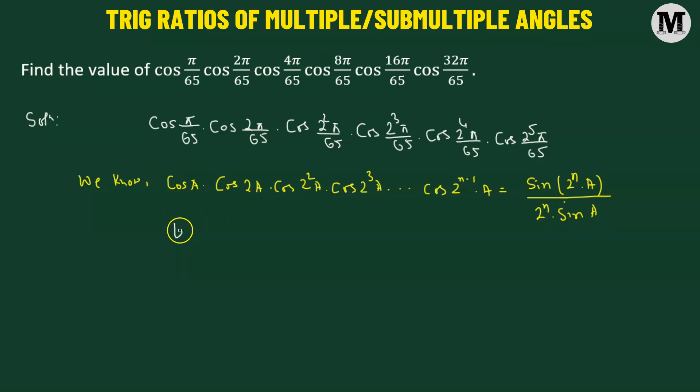Now, in our case, we will suppose that A corresponds to pi over 65. Expression 1 now is going to become cosine of angle A multiplied to cosine of 2A times cosine of 2 squared A times cosine of 2 cubed A times cosine of 2 raised to the power of 5A.